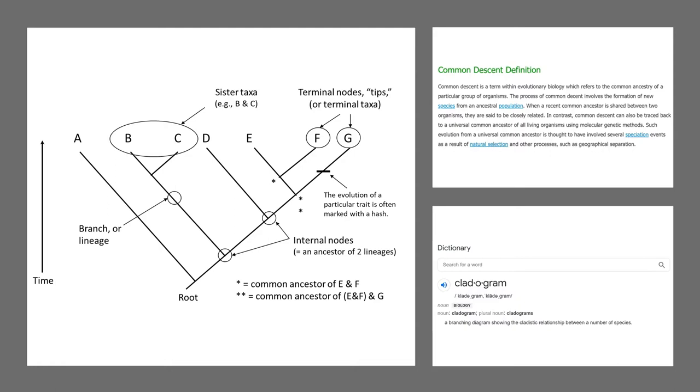Common descent is a term within evolutionary biology which refers to the common ancestry of a particular group of organisms. The process of common descent involves the formation of new species from the ancestral population. When a recent common ancestor is shared between two organisms, they are said to be mostly related.